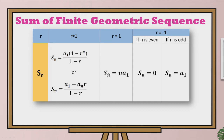If your finite geometric sequence has a common ratio equal to 1, we use the formula S sub n equals n times the first term. Now if the finite geometric sequence has a common ratio equal to negative 1, we then look for the value of n. If n is even, the sum of the finite geometric sequence is equal to 0. If n is odd, the sum is equal to the first term.